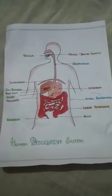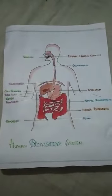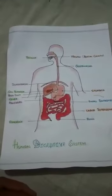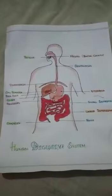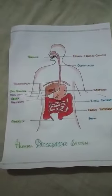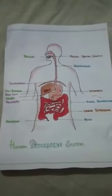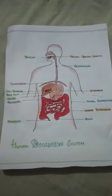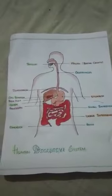The various steps in the human digestive system are ingestion, digestion, absorption, assimilation and egestion. The first step is ingestion — when we take food into the mouth with the help of our hands.